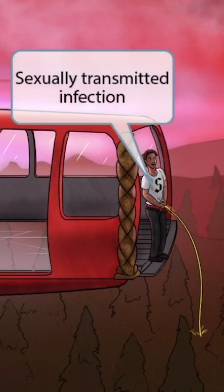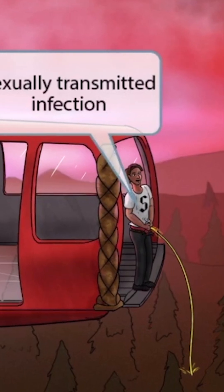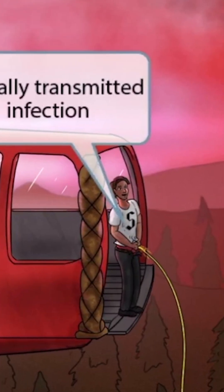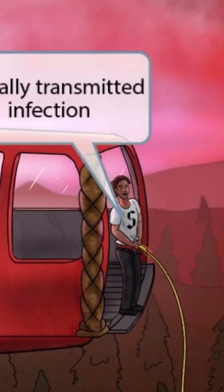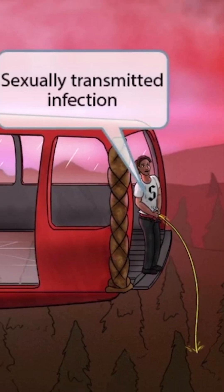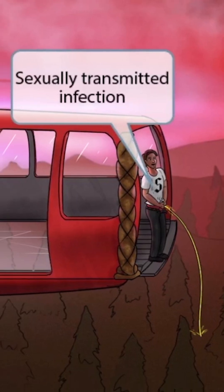We've added a guy in the gondola who is peeing off the ledge — I guess he couldn't wait until they got to the top of the mountain. If you look closely at his shirt, you can see we've included the letter S on it. This is a reference to the Scarlet Letter, which is about a woman who conceives a daughter through an affair and is required to wear the letter A on her dress, standing for adulterous. The letter S on this person's shirt is a reference to the novel to help you memorize that Neisseria gonorrhea is a sexually transmitted infection.